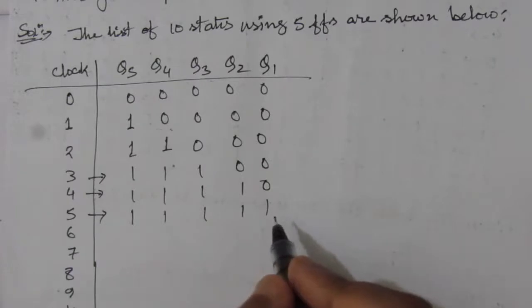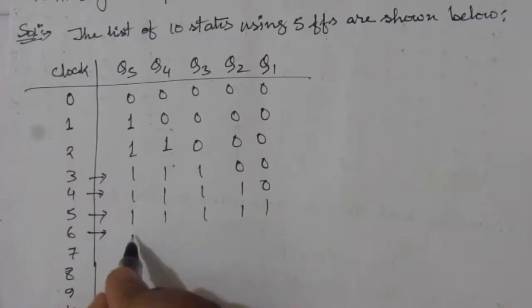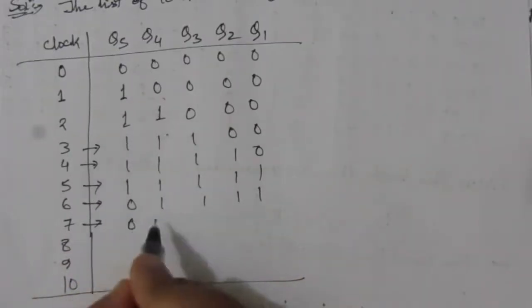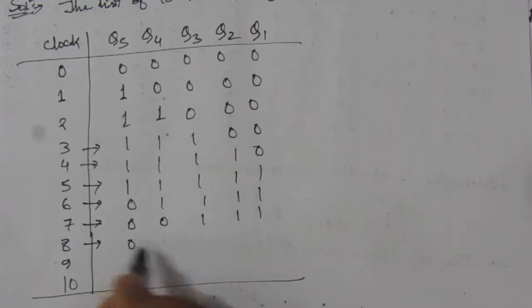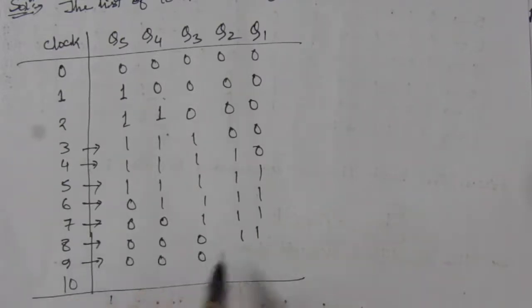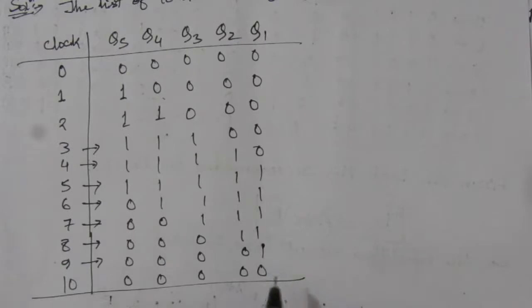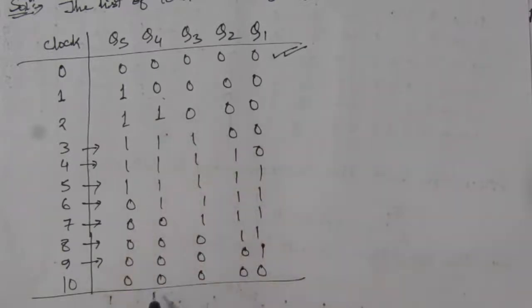Now we have 1 at the rightmost flip-flop, so its complement is 0, and zero enters the leftmost stage. The sequence continues: 01111, then 00111, then 00011, then 00001, and finally 00000 — returning to the initial reset condition after 10 clock cycles.